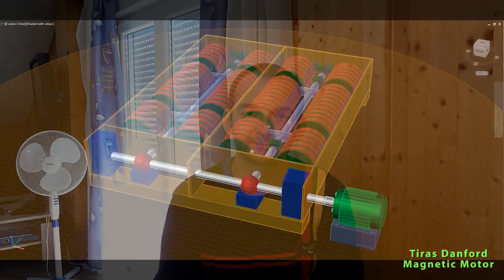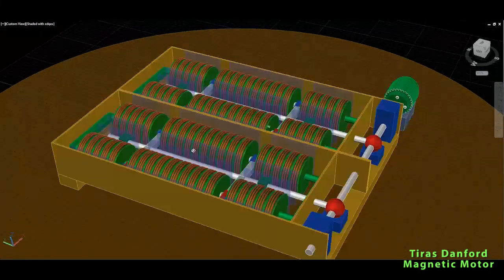So not to waste any time, let's get immediately to the drawings and see how this is supposed to work and how this can give us free energy on the output. Okay viewers, so this is the Tyrus Danford magnetic motor.